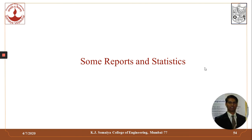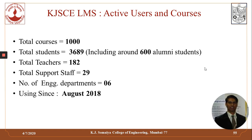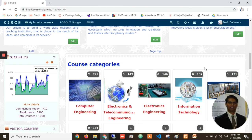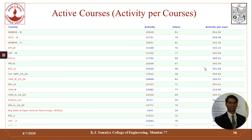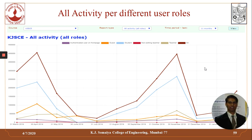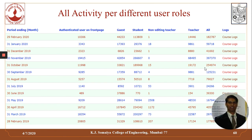Some reports and statistics of our Moodle LMS usage: around 1,000 courses, more than 3,600 students, 182 teachers, 29 support staff, catering to six engineering departments, and being used since August 2018. This is the statistics page showing courses department-wise and a summary of courses. Activity per user for all active courses shows that student participation has increased and there is better engagement. We can also see activity per course and all activity for different user roles with respect to certain time periods.